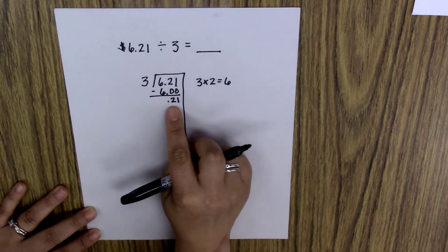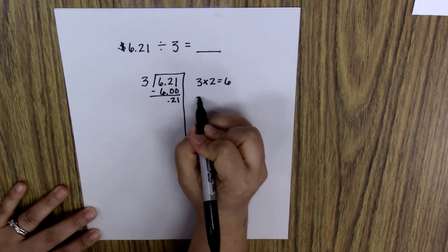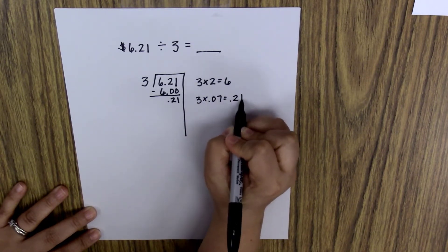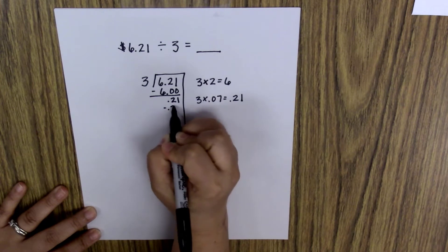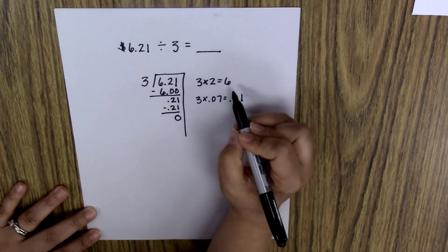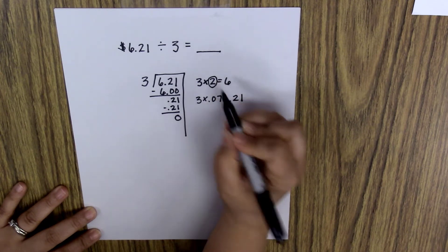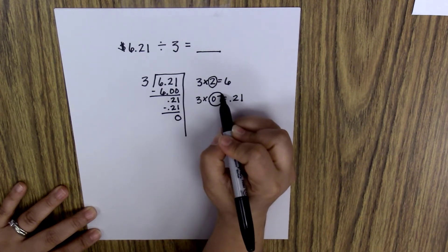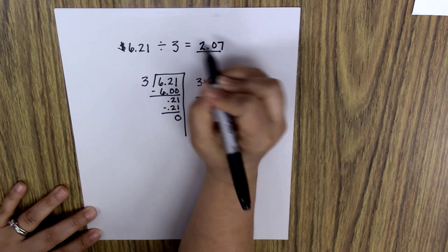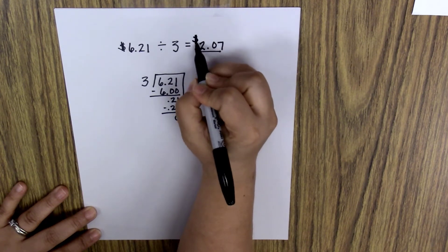Now that I know I'm left with $0.21, I know that three times seven hundredths is 21 hundredths. So if I subtract that, I'm left with zero. If I add my two and my seven hundredths, I get an answer of $2.07 for each person to pay.